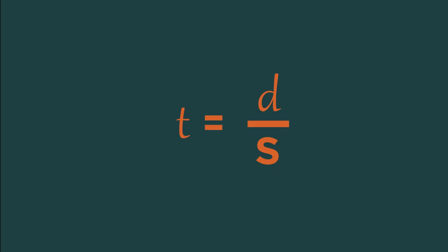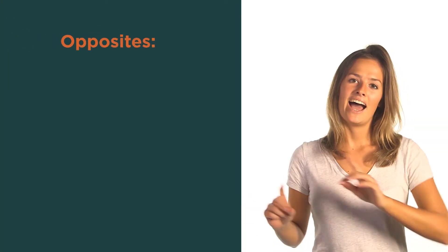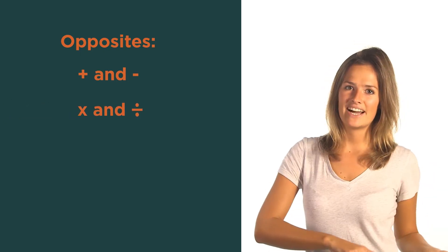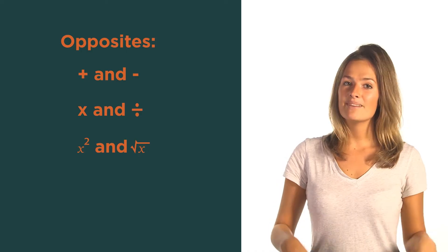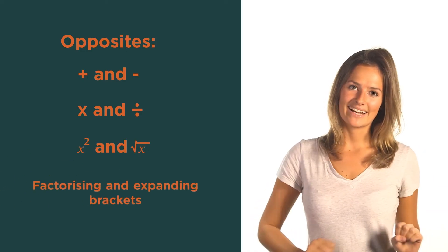To change the subject we make use of opposites. Adding and subtracting are opposites, multiplying and dividing, squaring and square rooting are opposites. And sometimes we even expand and factorise brackets.